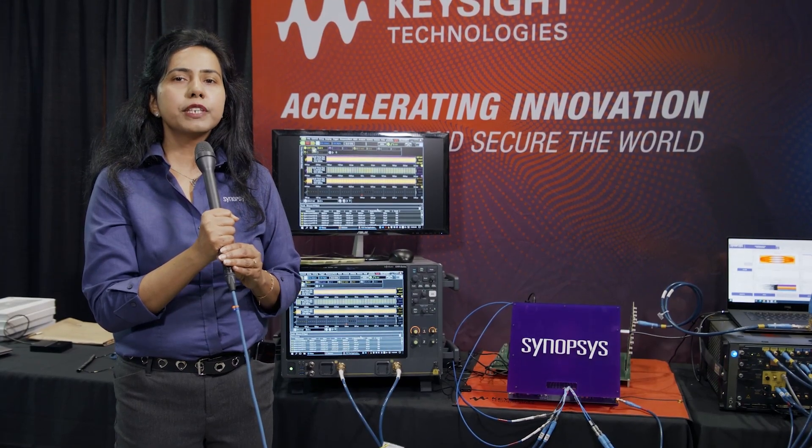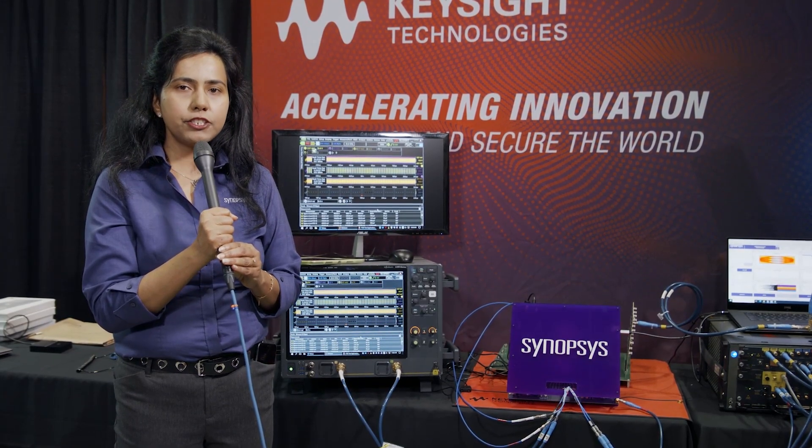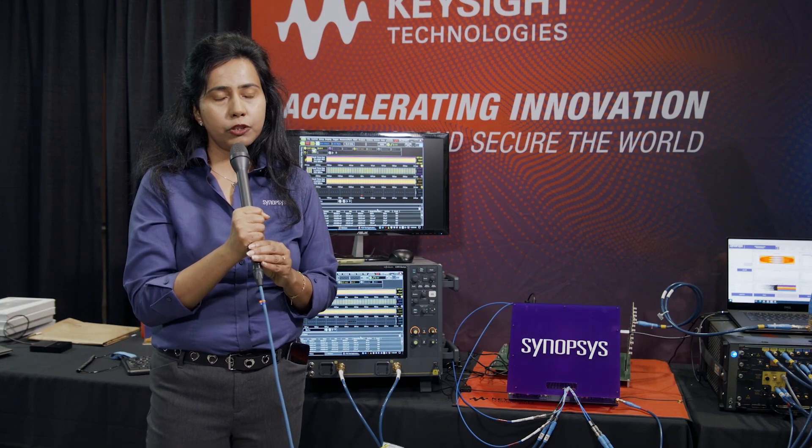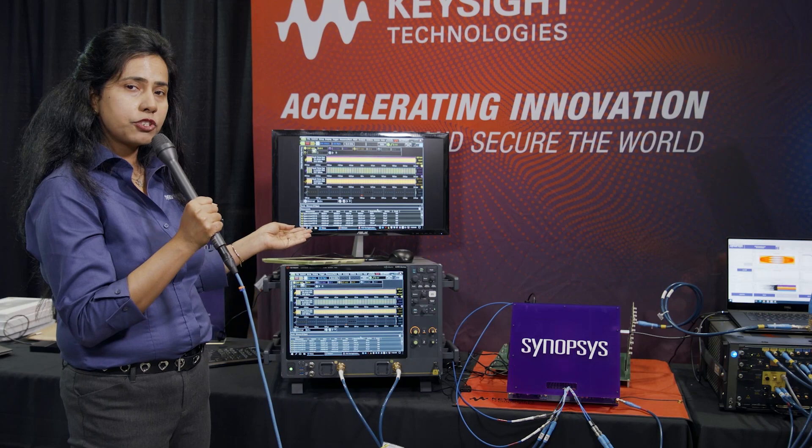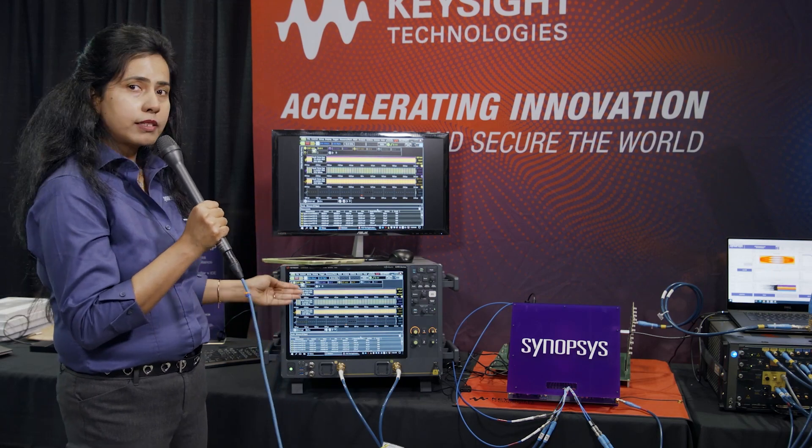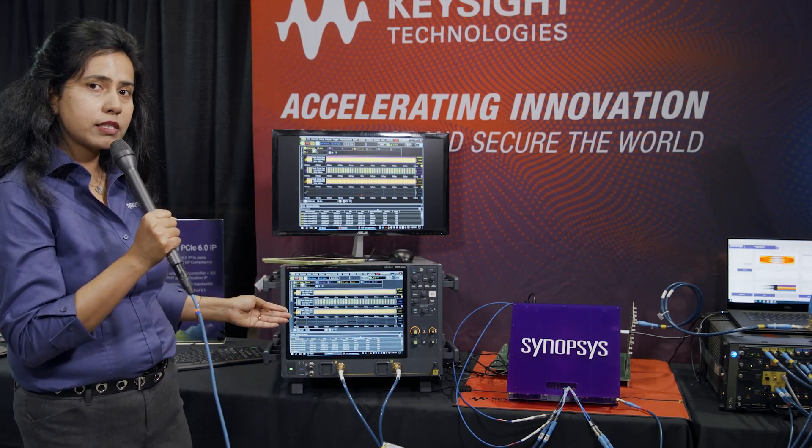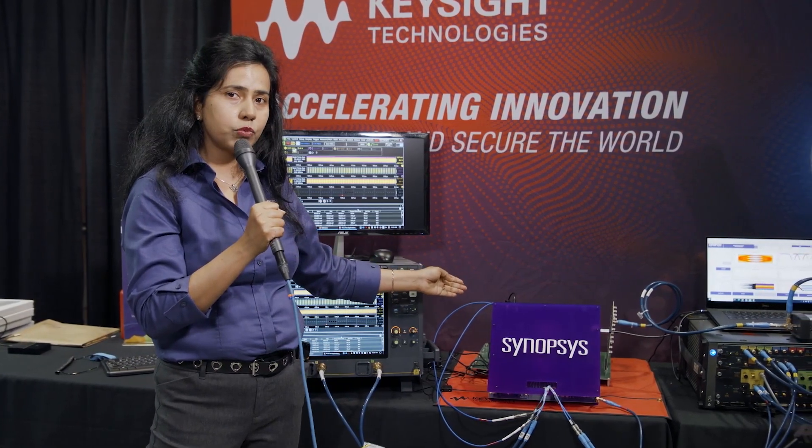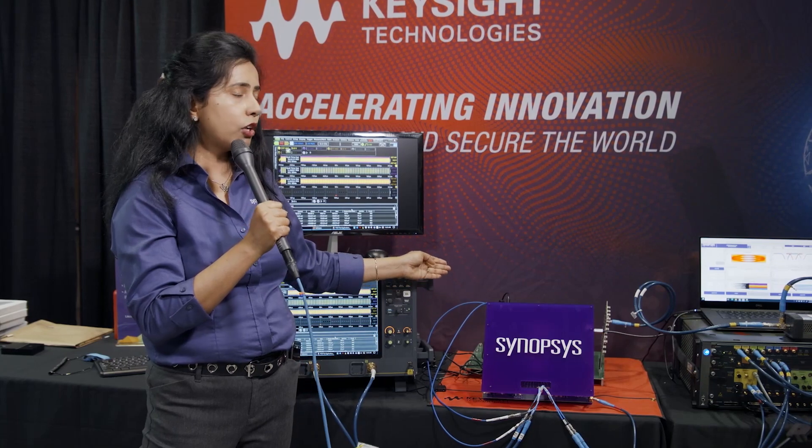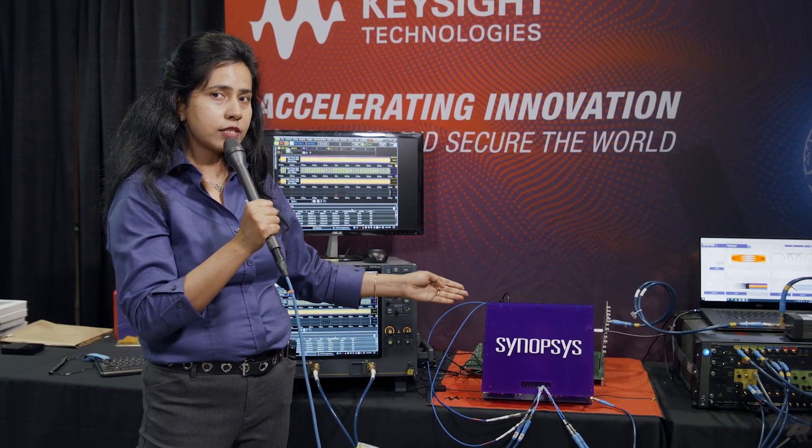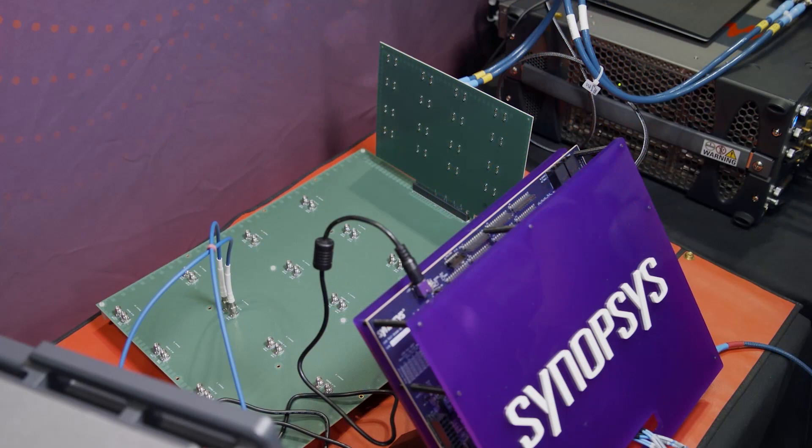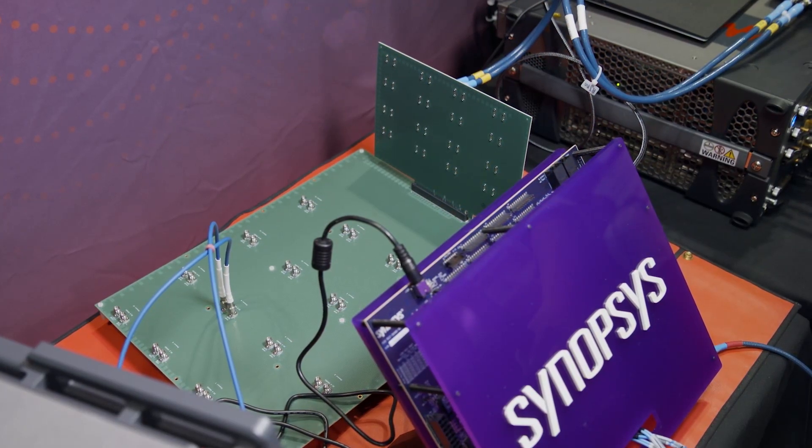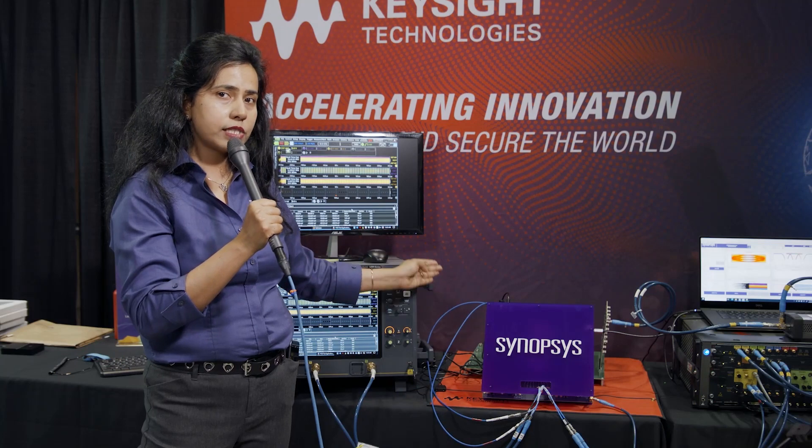We are at Keysight booth. We are showcasing here PCIe Gen 6 receiver compliance testing with Keysight's equipment. Looking more closely in the demonstration itself, the BERT here is transmitting PRBS 31 pattern and it's going to the ISI channel. The ISI channel has the worst case insertion loss. The total insertion loss is 33 dB. It's going to the Synopsys evaluation board which is located inside this purple box here. The receiver is basically equalizing the whole channel.